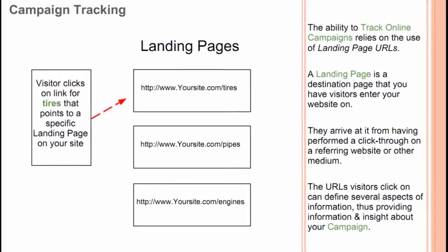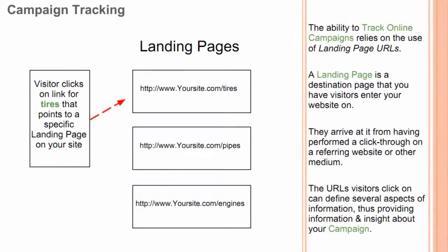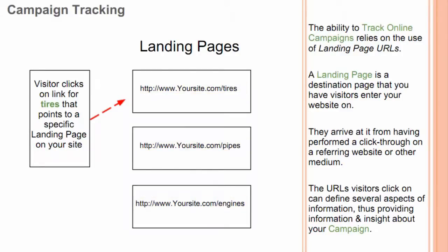The ability to track online campaigns relies on the use of landing page URLs. A landing page is a destination page that you have visitors enter your website on. They arrive at it from having performed a click through on a referring website or other medium. The URLs visitors click on can define several aspects of information, thus providing information and insight about your campaign.